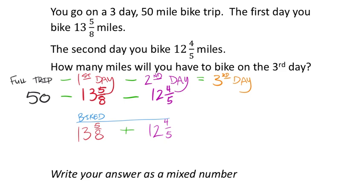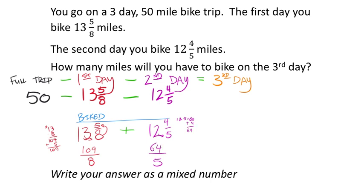Using the cycle method for the first fraction: 13 times 8 is 104, add the numerator 5 to get 109 eighths. For the second fraction: 12 times 5 is 60, add the numerator 4 to get 64 fifths. To add these, we need common denominators. Multiplying both ways: 8 times 5 or 5 times 8 gives a common denominator of 40 either way.